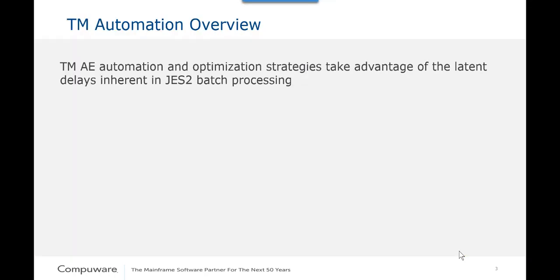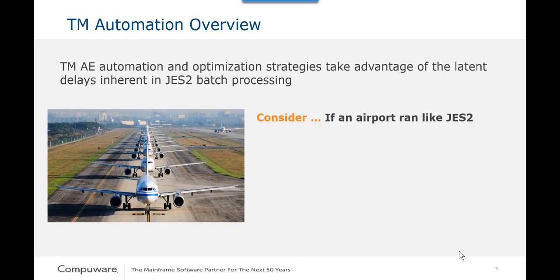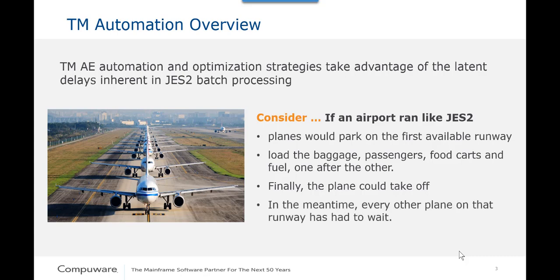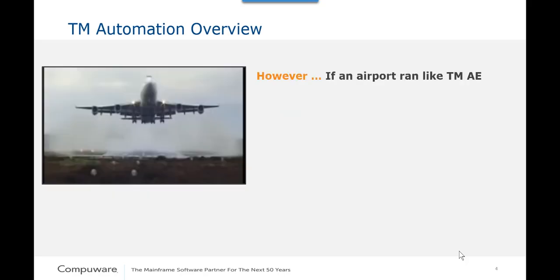Throughput Manager was designed to take advantage of the latent delays inherent in JAS2 batch processing and WLM execution. Consider if an airport ran like JAS2. Planes would park on the first available runway, then they'd load the baggage, passengers, food carts, and fuel one after the other. Finally, the plane could take off. But in the meantime, every other plane on that runway has had to wait. Then it starts all over again for the next plane.